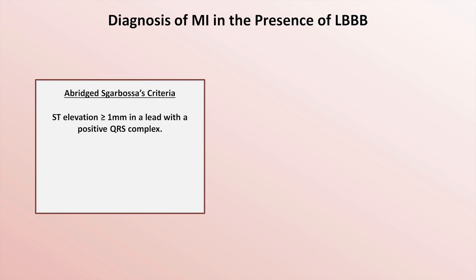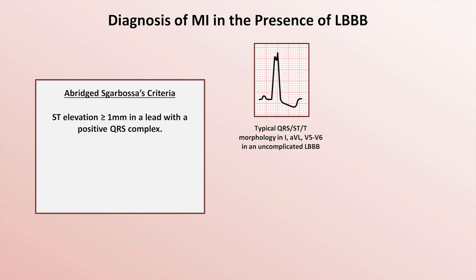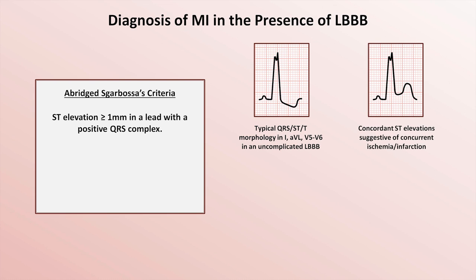Formally there are three SCARBOSA criteria, but one provides almost no additional diagnostic benefit, so I advocate an abridged form with only two. The first is ST elevation equal to or greater than 1 mm in a lead with a positive QRS complex. Here is a typical QRS complex, ST segment, and T wave in leads 1, AVL, V5, and V6 in a patient with a left bundle branch block — these are the changes due to just the block. And here is what those segments and waveforms might look like in those leads in a patient experiencing a STEMI: there is ST elevation of greater than 1 mm.